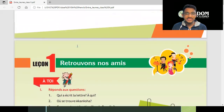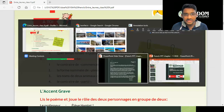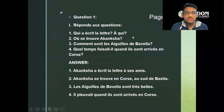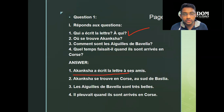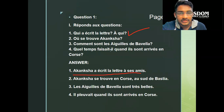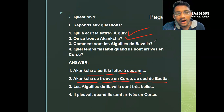Now we are on page number six. I've already typed each and everything for you. The first question: who wrote the letter and to whom? — Akansha wrote the letter to her friends. Second: where is Akansha situated right now? — Akansha is situated in Corse, the Corsica island, in the south of Bastia.